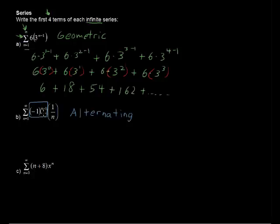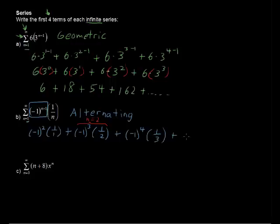Notice we have n plus 1 in the exponent now. So this would go negative 1 to the 2 because we start when n is 1, so 1 plus 1 is 2. Multiplied times 1 over 1, plus negative 1 to the 3 times 1 over 2, plus negative 1 to the 4 times 1 over 3, plus negative 1 to the 5th times 1 over 4.